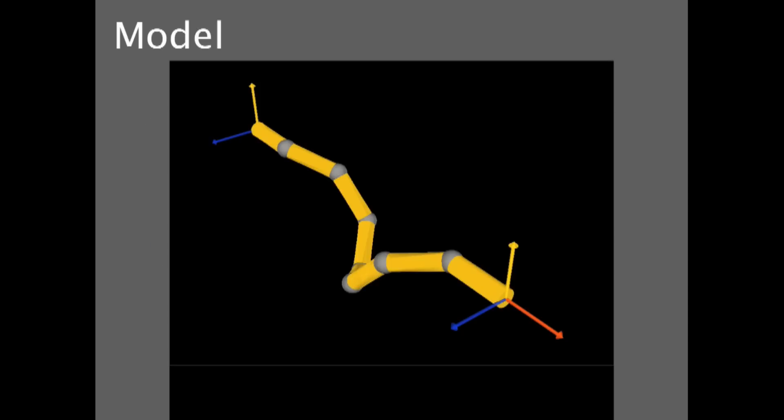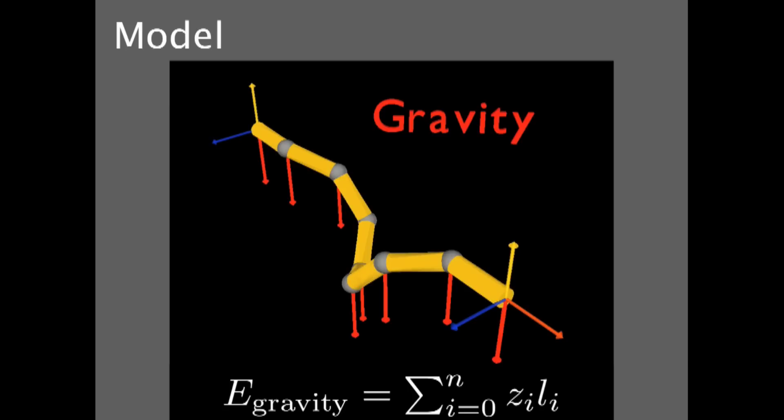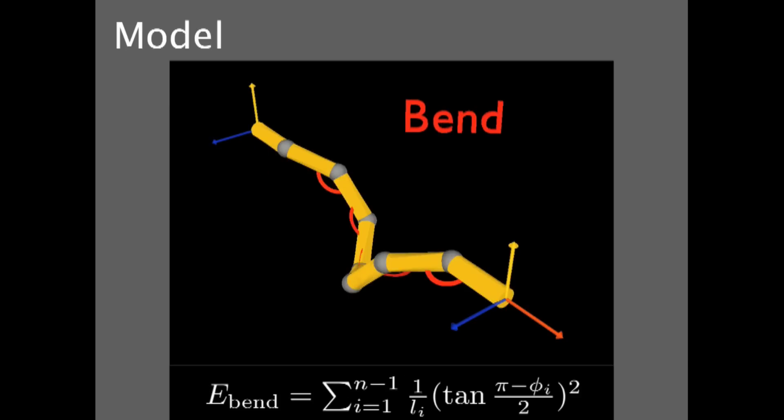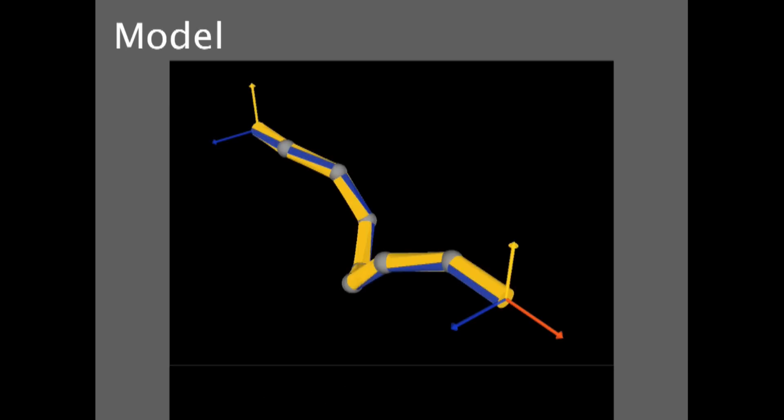So the way our model works is we set up a specific number of links linked together with some end constraints. And first, you have the gravity, which just corresponds to the height of each of the vertices. There's an energy associated with bending, which is the angle between consecutive vertices. And a twisting, which goes across the object. And what we're going to actually do is we're going to assign a frame such that the first axis is aligned with the next link, and the other axes correspond to the actual material.